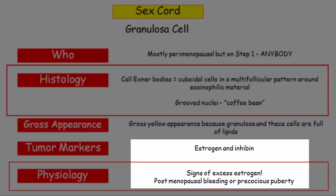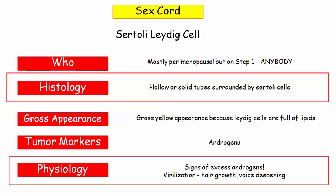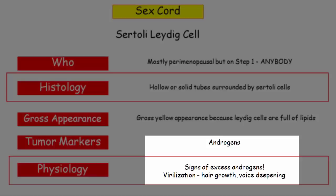Sertoli-Leydig cell tumors histologically appear as hollow or solid tubes surrounded by Sertoli cells. Gross appearance is very similar to granulosa thecal cell tumors — a gross yellow appearance — because Leydig cells are also full of lipids. The tumor markers and physiology are tied together: Sertoli-Leydig cells secrete androgens, so physiologically these patients will show signs of excess androgens — virilization, including hair growth, voice deepening, and even acne.